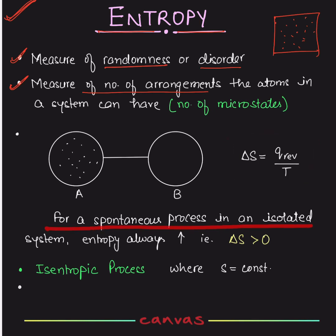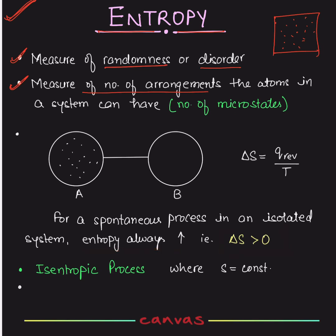For a spontaneous process in an isolated system — and the universe is also an isolated system — entropy is always growing. This is the Second Law. Delta S will always increase. For a reversible process, delta S is zero. But we are talking about a spontaneous process. Spontaneous processes are mostly irreversible.